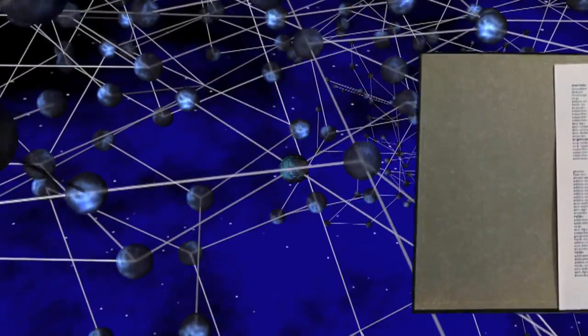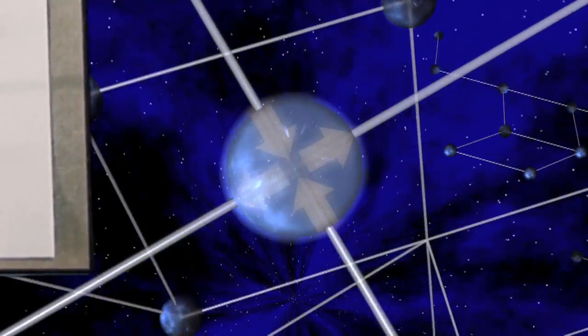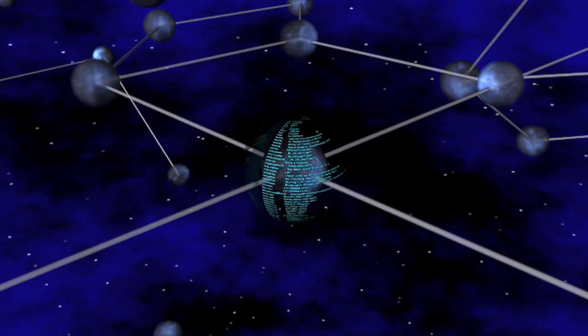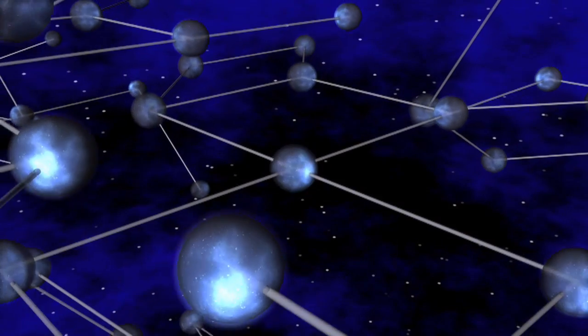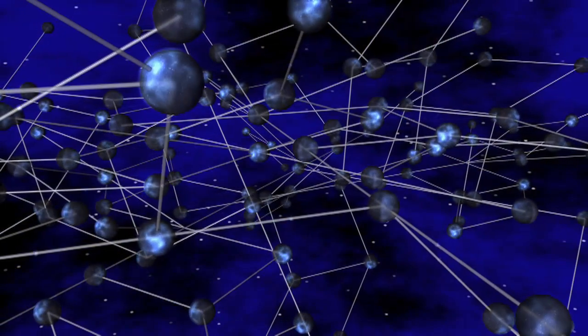The RIR records this information in a publicly accessible registry. Network administrators then configure their routers to announce their prefixes to the rest of the Internet. But how do they know if the announcement they see is from the legitimate holder of that address block?